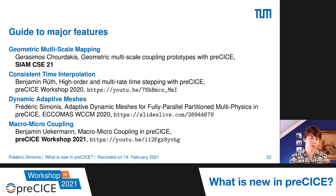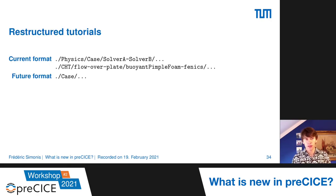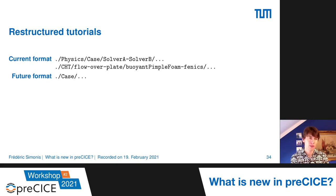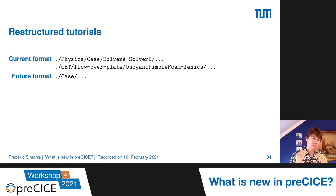Let's now proceed to the final part: everything related to the preCICE ecosystem — everything around the library. We started a restructure of the tutorials some time ago but sadly couldn't finish it in time for the workshop. The current format has folders for specific physics, inside which are case folders for specific cases, inside which are folders for specific solver combinations. For example, conjugate heat transfer → flow over plate → buoyantPimpleFoam with FEniCS, containing all case files to set up and run that specific case.